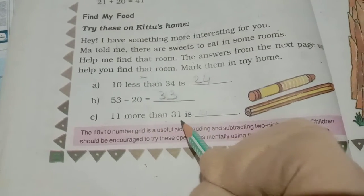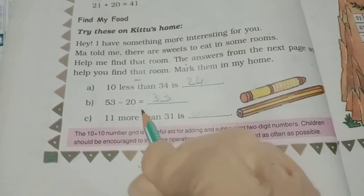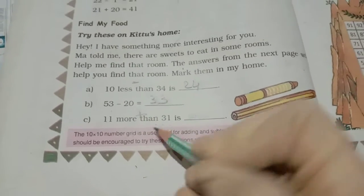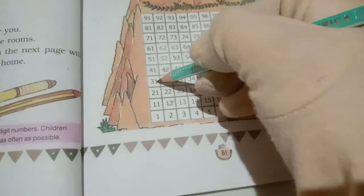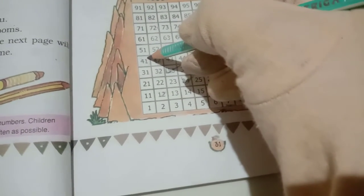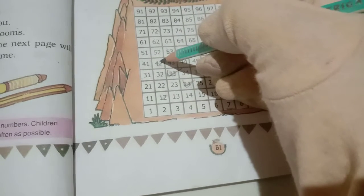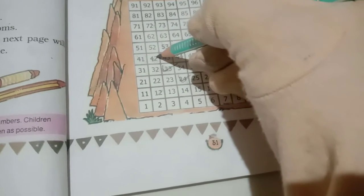Now 11 more than 31. More than means plus. So we have to go 31. Where is 31? 31 is here. One step we have to go up means 41. And we go to 1 right side. So answer will get 42.